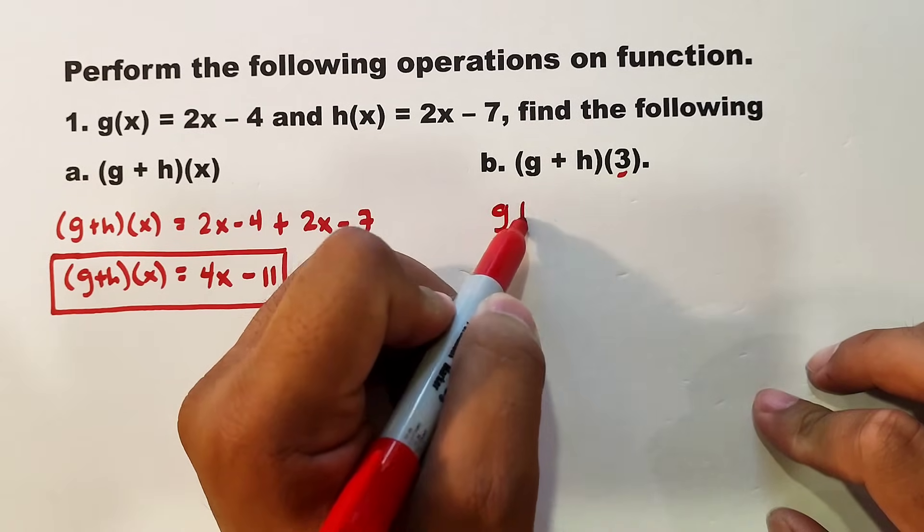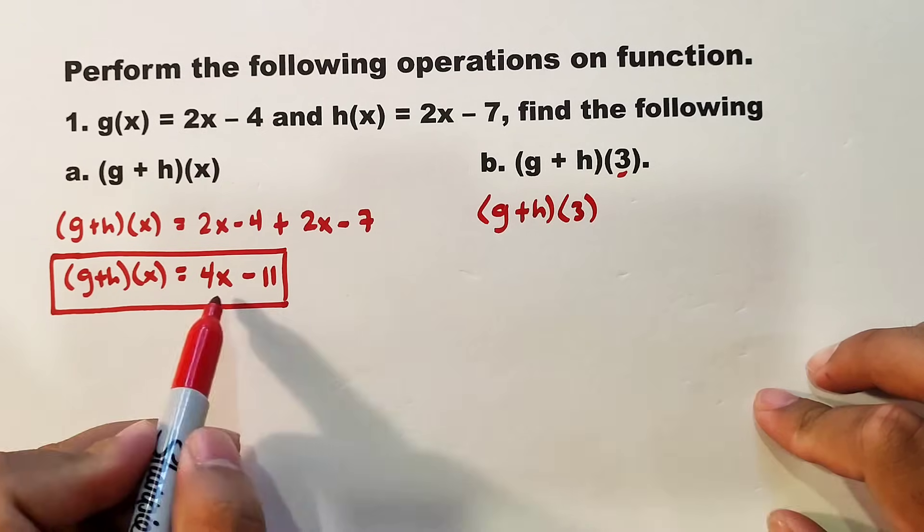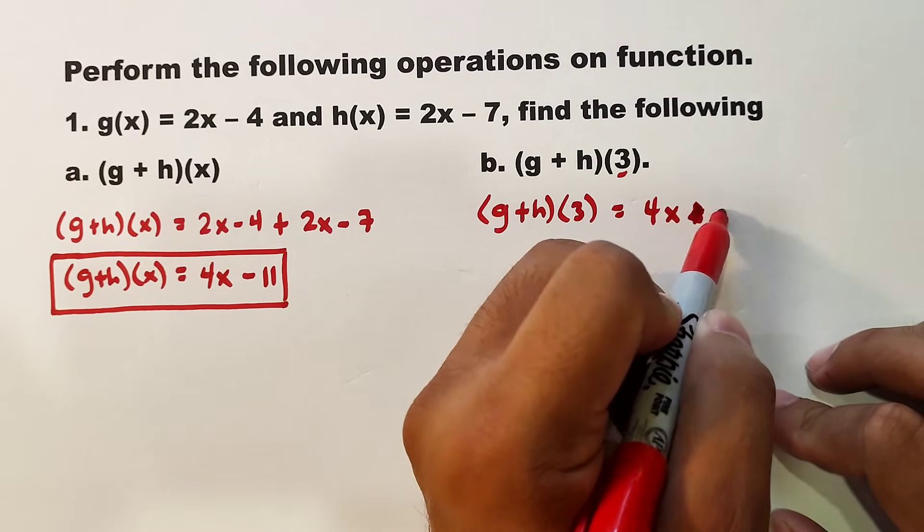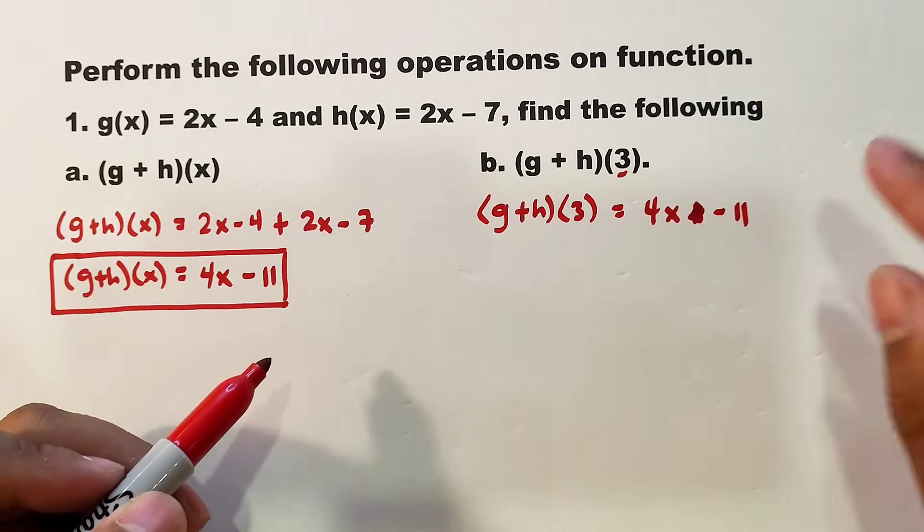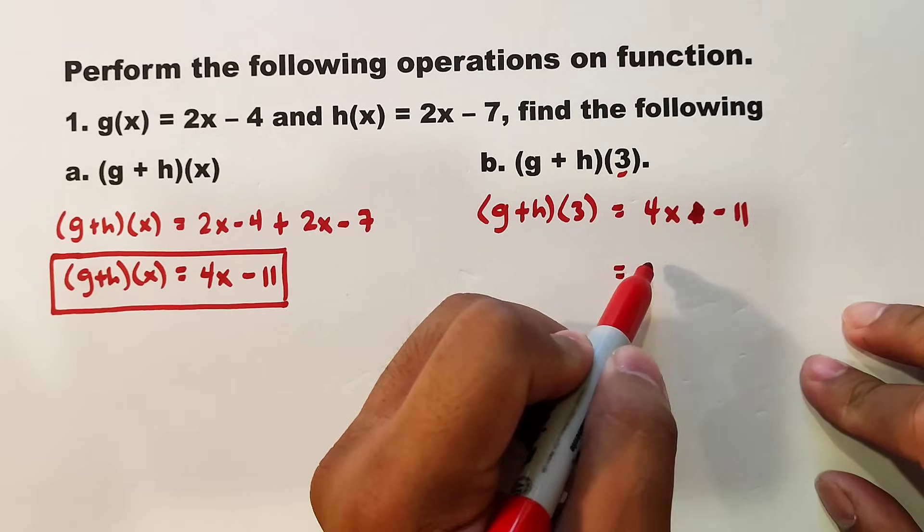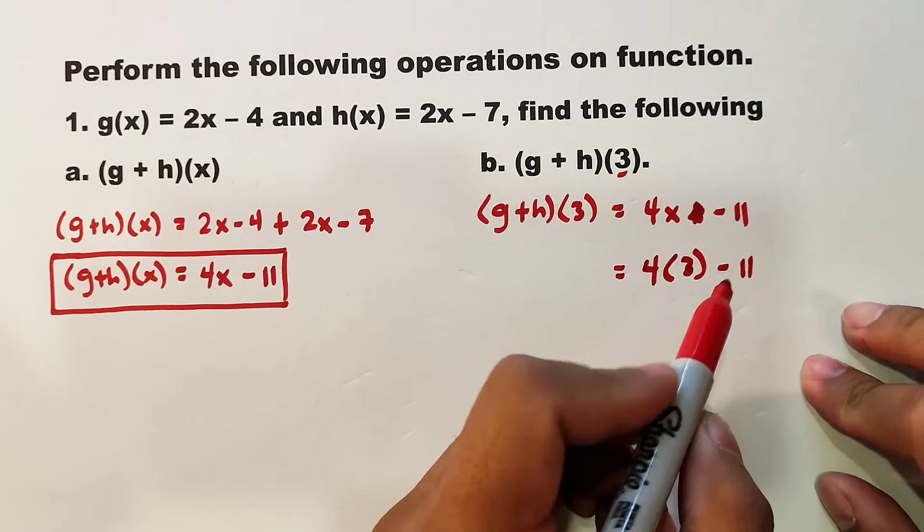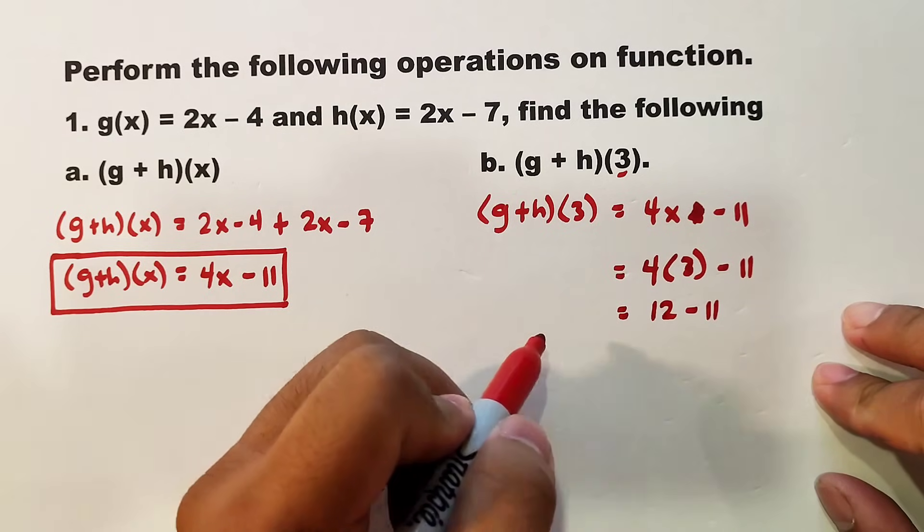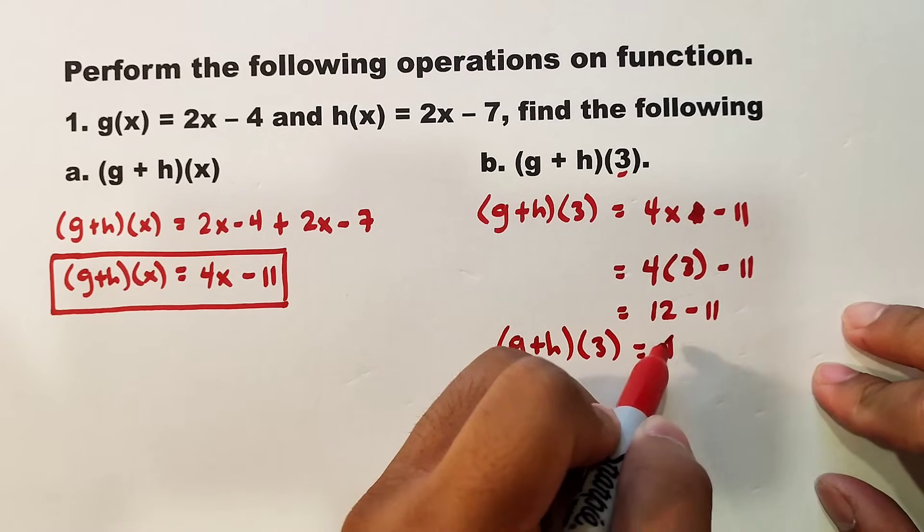So (g + h)(3) = 4x - 11. After adding the two functions, you can plug in or replace the variable x using your input 3. What will happen is that we have 4(3) - 11. Multiply these numbers, the product is 12, then minus 11. Your (g + h)(3) is simply positive 1.